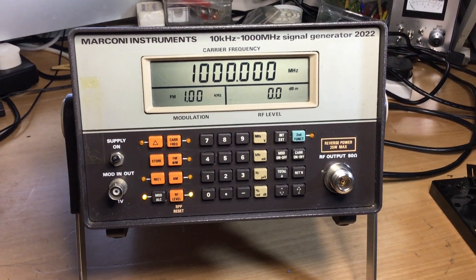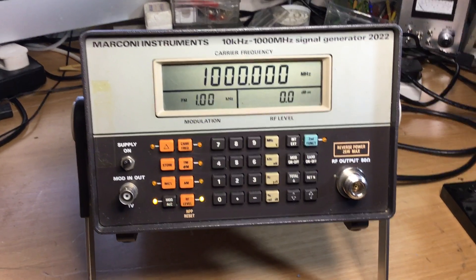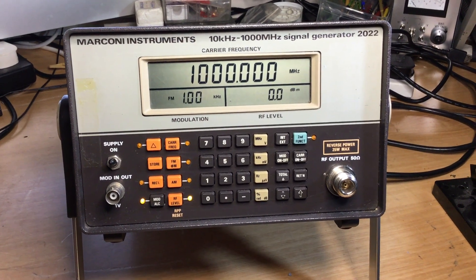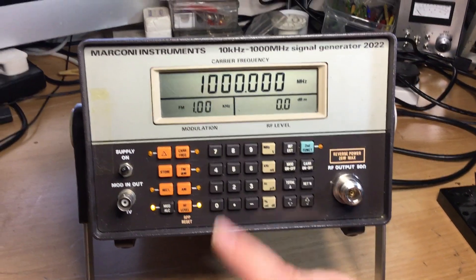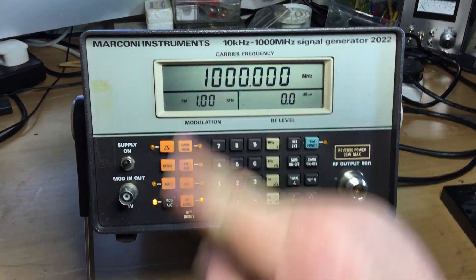Hello there, thank you for joining me again today. This is a video regarding the Marconi Instruments signal generator 2022 model, which boasts a frequency range of 10 kilohertz to 1 gigahertz.